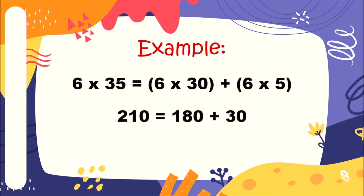So six times 35 is equal to 210. Let's verify: six times 30 equals 180, and six times 5 equals 30. Then we add the products: 180 plus 30 equals 210. So 210 is equal to 210 — both answers are the same.